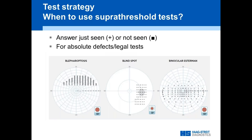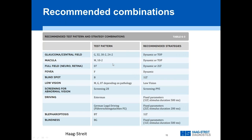Suprathreshold tests give just an answer of seen or not seen, or potentially a relative defect with a two-level test. This really makes sense when you're looking for an absolute defect, like ptosis where everything above is blind — why threshold at all? Or a blind spot — it's blind, so why threshold? Sometimes this is also used for legal tests like a driving ability test, because the question is not how well does somebody see, but does somebody see a certain level to drive. There are recommendations in the Visual Field Digest covering the majority of common clinical indications.